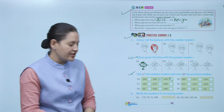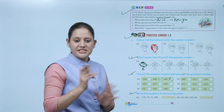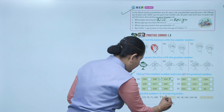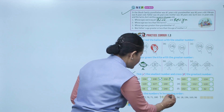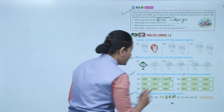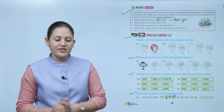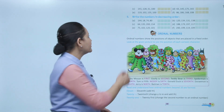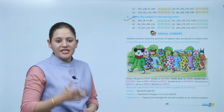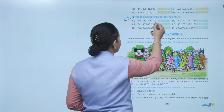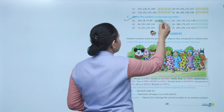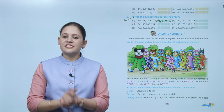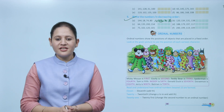Next: write the numbers in increasing order — increasing means ascending order from smallest to greatest. The order is: 71, 76, 172, 180. Next: write the numbers in descending order — decreasing from greatest to smallest. The order is: 144, 80, 74, and the smallest is last. This is the decreasing or descending order.